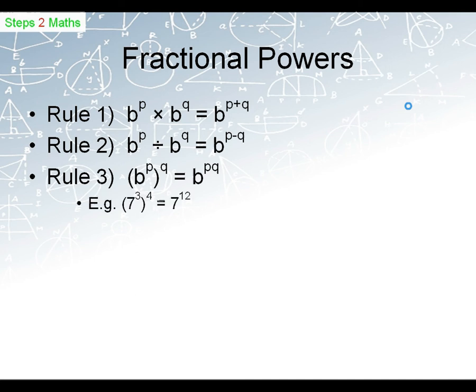Let's have a look at an example of that. So for example, with rule 3, if we've got 7 to the power of 3, all to the power of 4, that would give us 7 to the power of 12. Now that followed directly from rule 1, which hopefully we saw an example from.